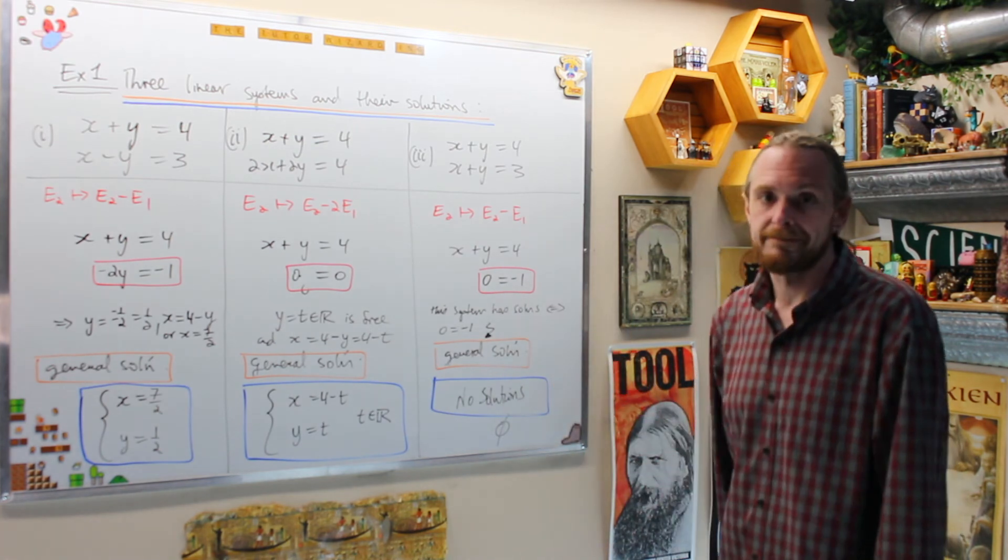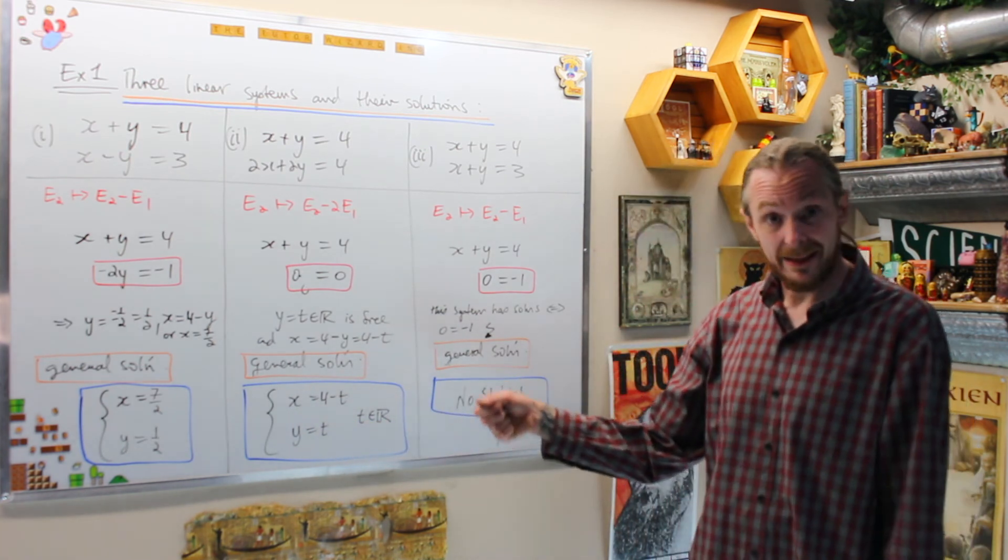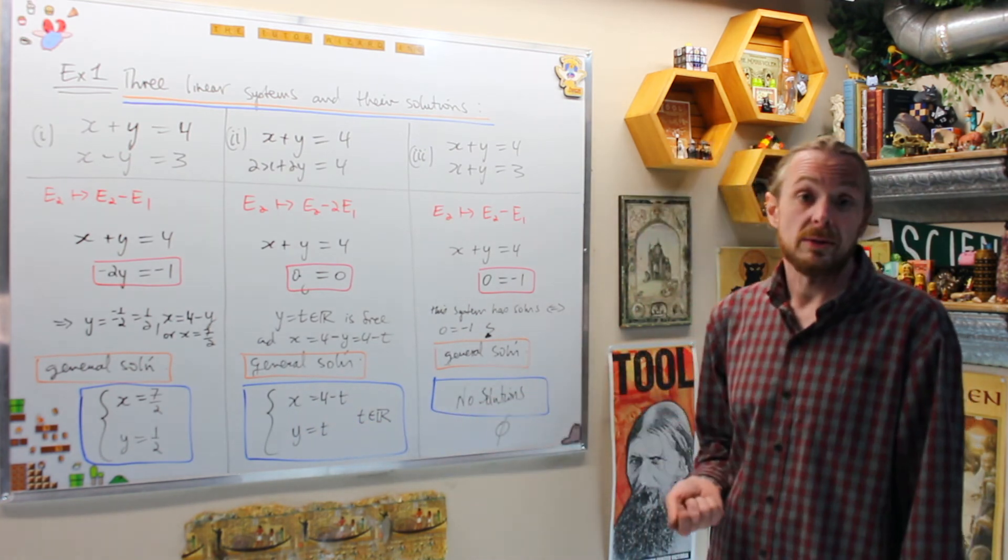Again, there's only ever three cases: a unique solution, infinitely many solutions with a free parameter at least one, or no solution.